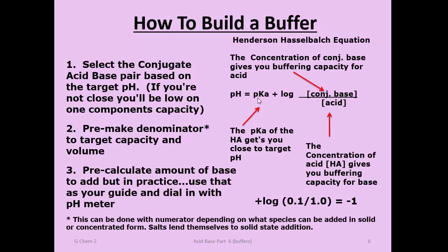The last step: choose your acid system, pre-make your acid to the right buffering capacity, then solve according to your target pH for the concentration of the resulting conjugate base. In actual lab practice, this is a pre-calculation—a theoretical amount of conjugate base to add so you know the ballpark. In practice, you prepare the acid solution, drop a pH meter in, and bring the conjugate base in as a powder to pH—you won't have much change in volume, but your buffer will be spot on because you've dialed it in with a pH meter.